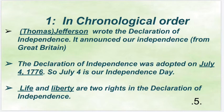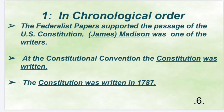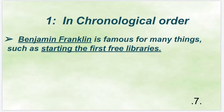Life and liberty are two rights in the Declaration of Independence. The Federalist Papers supported the passage of the U.S. Constitution. James Madison was one of the writers. At the Constitutional Convention, the Constitution was written in 1787. Benjamin Franklin is famous for many things, such as starting the first free libraries.